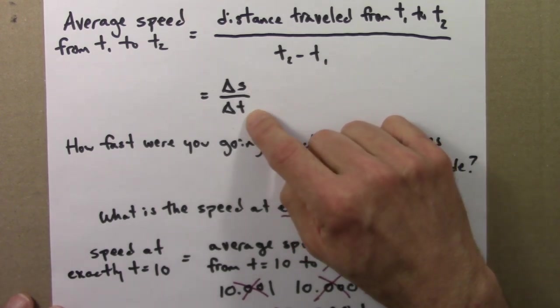This ratio will stay constant in most circumstances, and we say that that's the instantaneous speed.